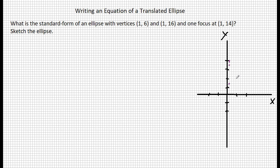Now the value of 2a is the distance between each of the vertices. Well, if this is at 1,6, and this is at 1,16, the difference between 16 and 6 is 10. So 2a equals 10. So that means that the value of a is 5.